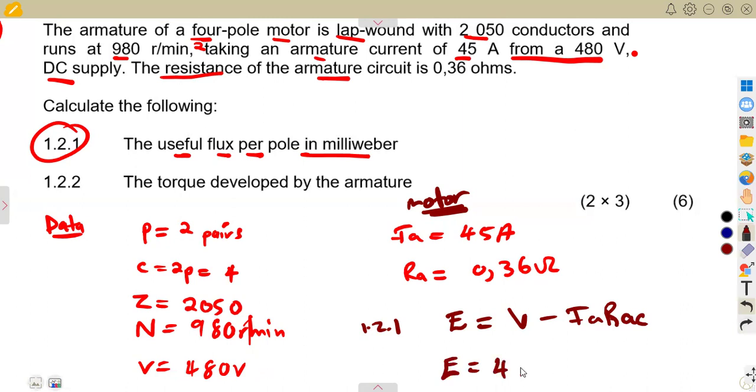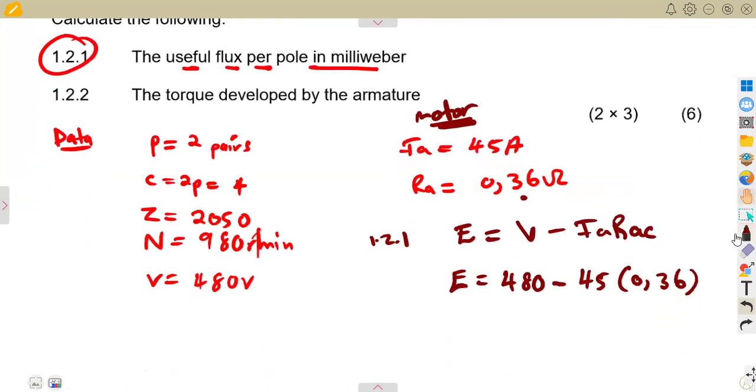So this is everything in the armature circuit. We can have the generated EMF. The voltage we are given 480, the armature current 45 amps, then only a single resistance 0.36 ohms that we are given in the armature. So we are going to have our E as 463.8 volts as the generated EMF.